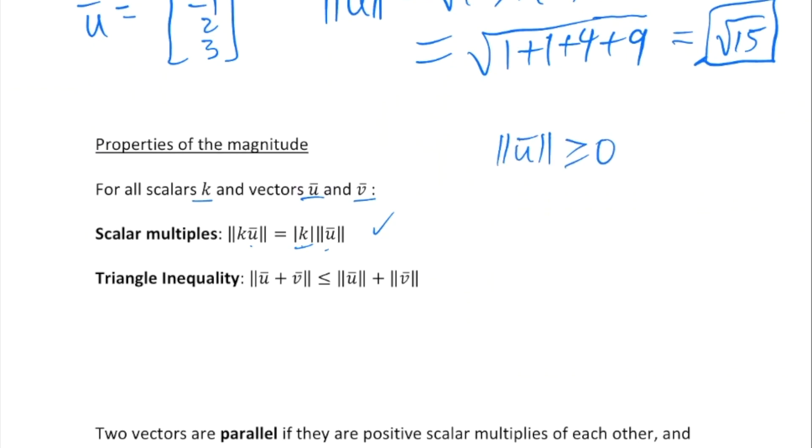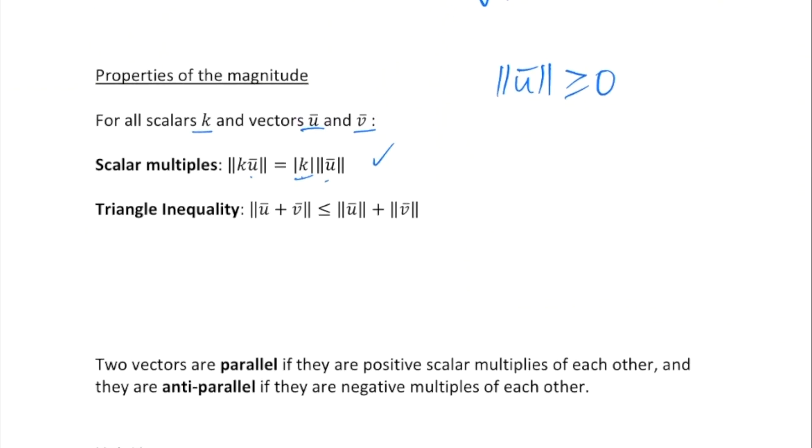The magnitude of u is always going to be greater than or equal to zero, as it represents a length geometrically. Here's something called the triangle inequality: the magnitude of the sum of two vectors is less than or equal to the magnitude of each individual vector.